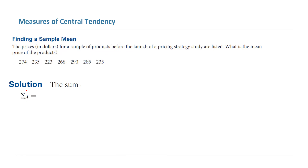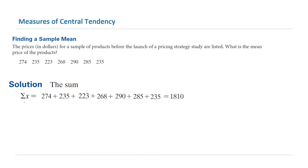The sum is equal to sigma x. We're going to take each number — 274, add it to 235, then 223, 268, 290, 285, and 235 — which equals 1810.